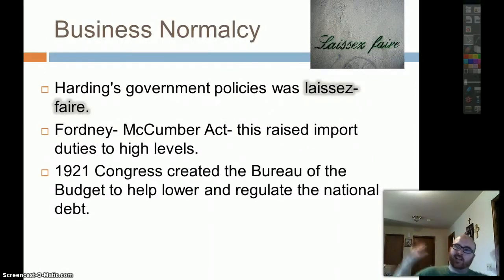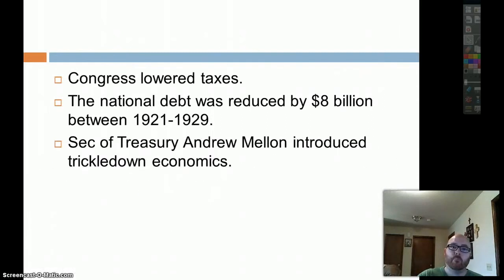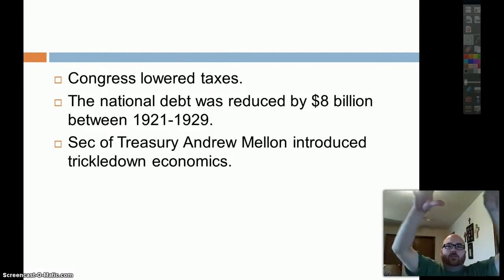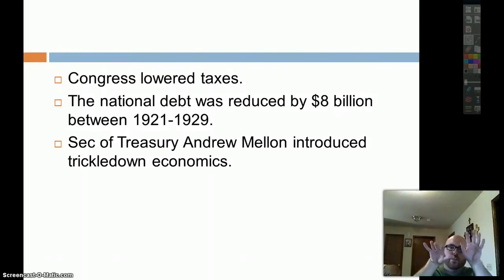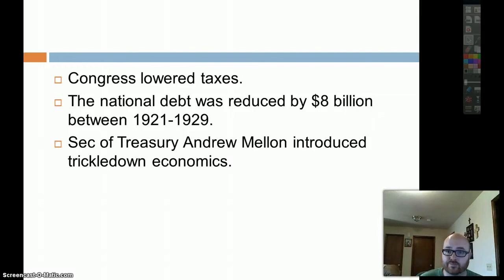Business as normalcy — Harding was very laissez-faire, very hands-off. Let people do what they want, let businesses do what they want. We're going to raise tariffs, create a way to lower and regulate national debt, and lower taxes. National debt was reduced by $8 billion between 1921 and 1929. Andrew Mellon, Secretary of the Treasury, introduced trickle-down economics — you pump stimulus money into corporations and big business, and it trickles down to the rest of the country. Harding was the first president to do that, then Hoover, and it really got popular with Ronald Reagan's Reaganomics in the 80s.